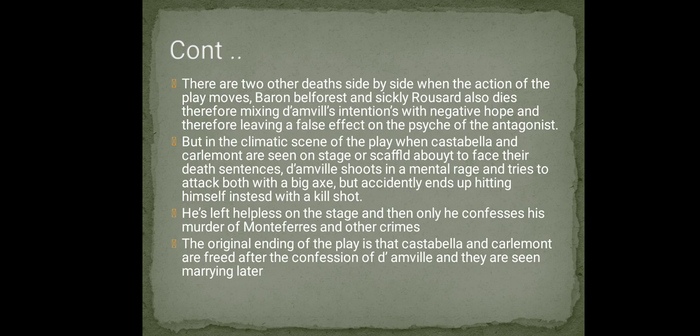In the climactic scene of the play, when Castabella and Charlemont are about to face their death sentences, D'Amville flies into a mental rage and tries to attack both with a big axe — but accidentally ends up hitting himself and is struck with a kill shot. Left helpless on stage, he confesses the murder of Montefiaris and his other crimes. Castabella and Charlemont are then freed and are seen marrying later.